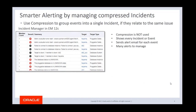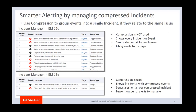To reduce the number of alerts, the best practice is to use the compression feature to group events into a single incident if those events relate to the same issue, so that you only need to deal with a single incident instead of managing multiple events or incidents separately. We have a screenshot of Incident Manager in 12c where compression is not used — each event or incident shows up in list view. Down here at the bottom is Incident Manager in 13c where compression is used. I only see two incidents, one for target down and one for metric alert, and each incident has five members included. So instead of managing ten different events, you only need to manage two incidents with related events consolidated.